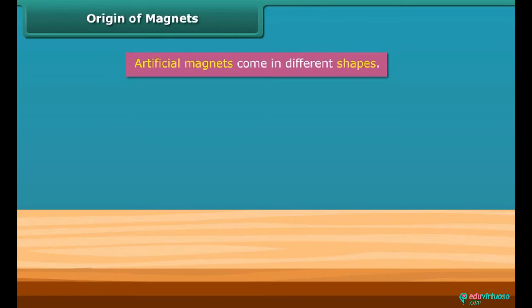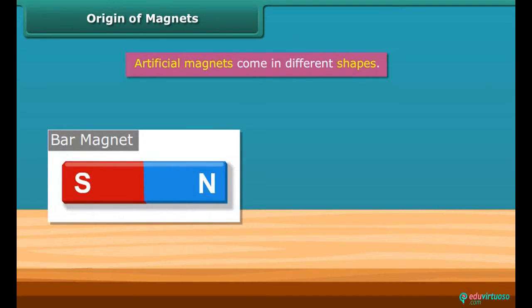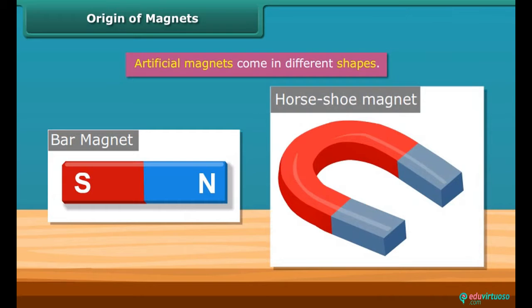Artificial magnets come in different shapes — for example, bar magnet, horseshoe magnet, etc.